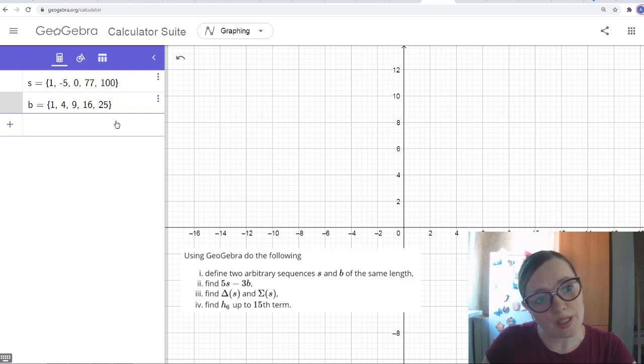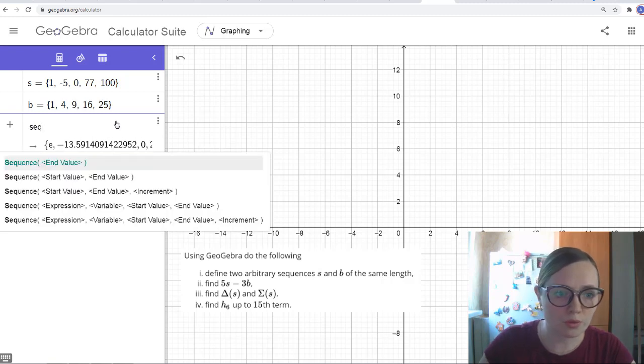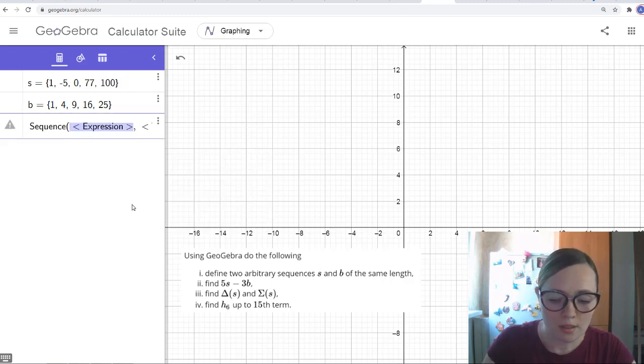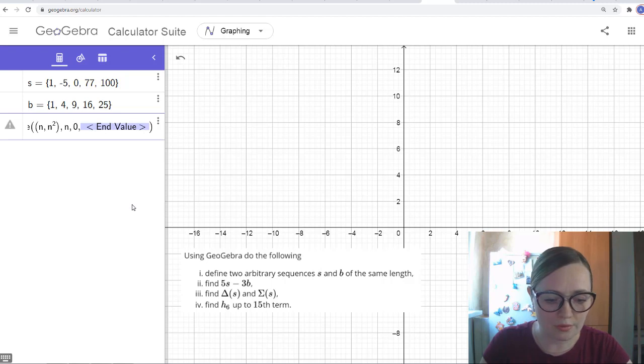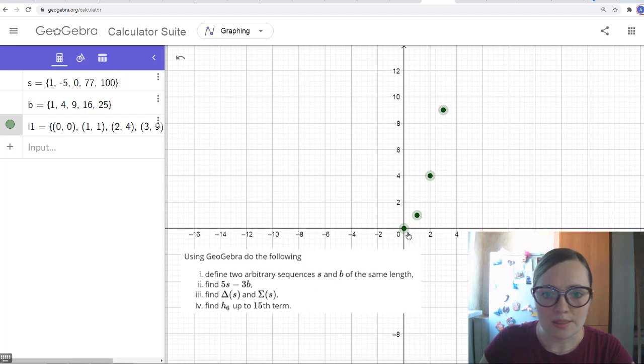And in GeoGebra, let me also notice that the sequence can be not just sequence of numbers, it can be sequence of anything. For example, let me write a sequence of points. So the expression is, let's say (n, n squared), variable n, from 0 to 5. You see we get a sequence of points. This is (0,0), (1,1), (2,4), (3,9), and so on.